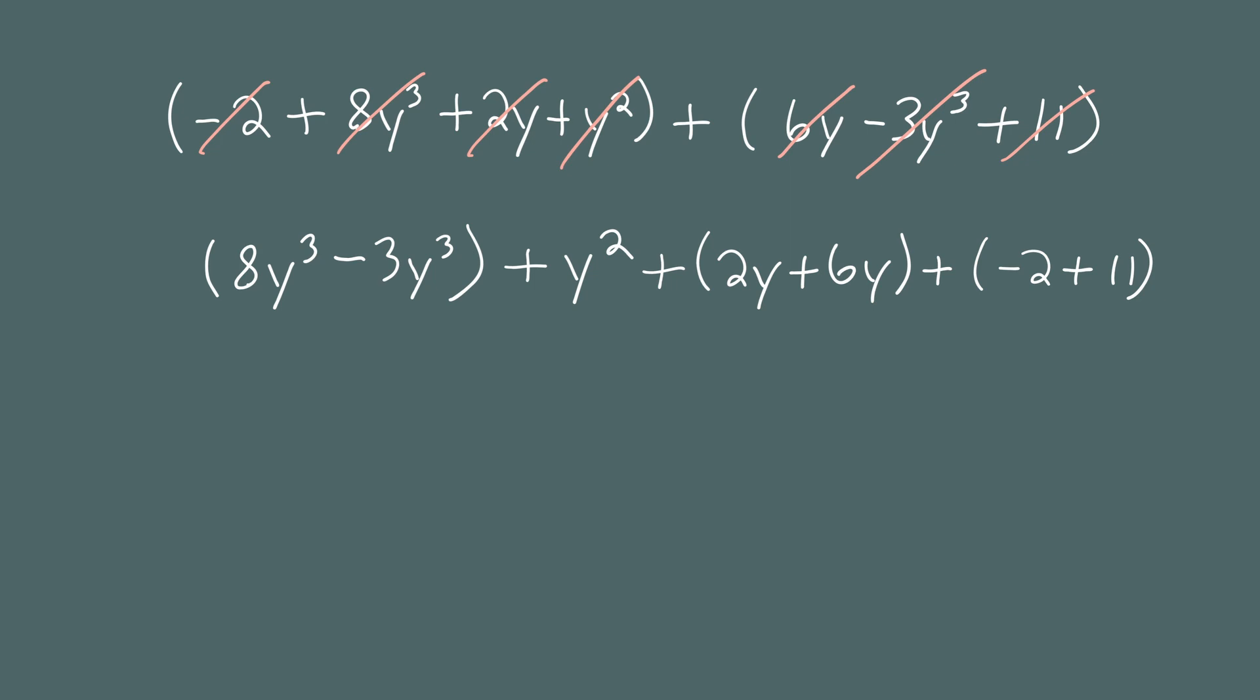8y cubed minus 3y cubed is 5y cubed. We then have y squared. We can't combine it with anything, but it's still part of the answer. 2y plus 6y is 8y. And lastly, negative 2 plus 11 is 9. So the sum of these two polynomials is 5y cubed plus y squared plus 8y plus 9.